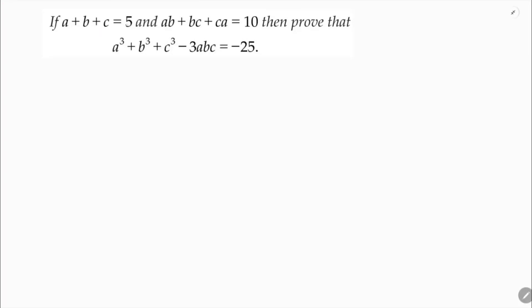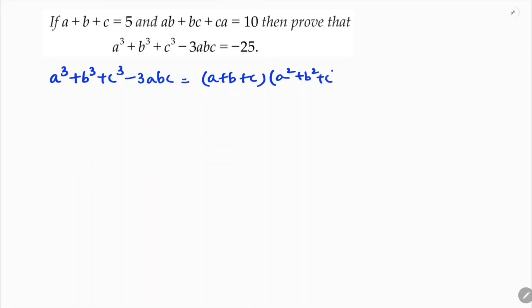If a plus b plus c equals 5 and ab plus bc plus ca equals 10, then we need to prove that a cube plus b cube plus c cube minus 3abc is minus 25. The formula for this is a plus b plus c, into a square plus b square plus c square minus ab minus bc minus ca.